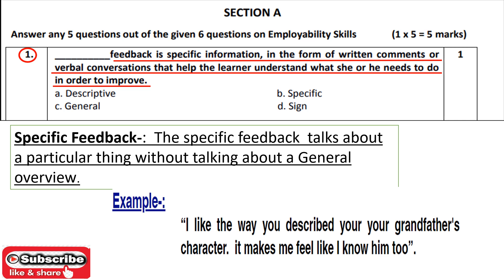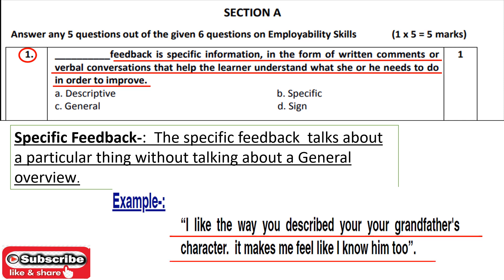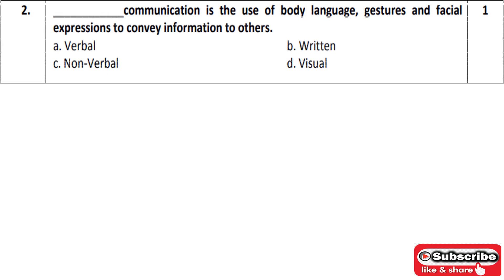In general feedback, we do not give written comments; we try to explain it verbally. For example, 'I like the way you described your grandfather's character.' Looking at this example, the feedback is specific to the grandfather's character. So the question asks about specific, general, and other types — the three ways of feedback. The answer for Question 1 is: descriptive feedback.